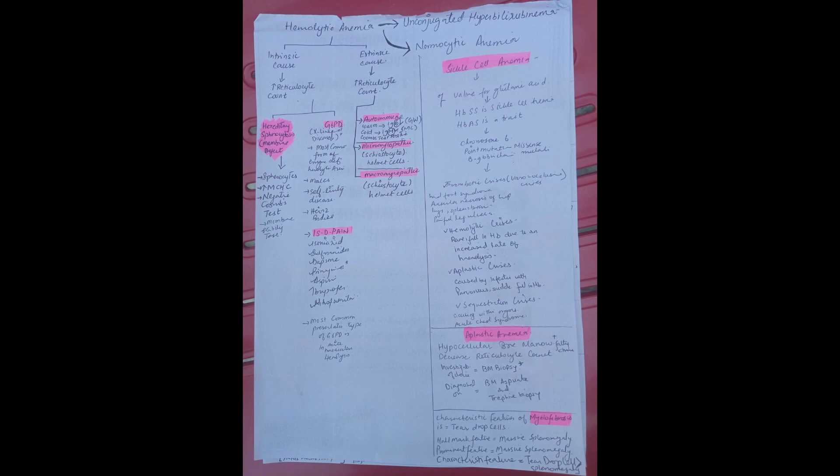There are four types of crises that occur in sickle cell anemia.